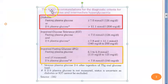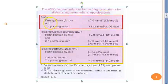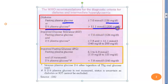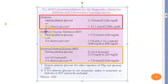This table shows WHO recommendations for diagnostic criteria for diabetes and intermediate hyperglycemia. For diabetes: fasting plasma glucose greater than 126 mg/dL, and 2-hour plasma glucose greater than 200 mg/dL — that is greater than 11 mmol/L — or fasting greater than 7 mmol/L. These are the values to remember for diagnosing diabetes.